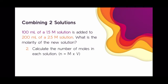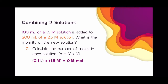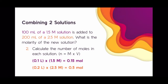The next step is to calculate the number of moles in each solution. To find moles, multiply the molarity of that solution by the volume in liters. For the purple solution, multiply 0.1 liters by 1.5 molar to get 0.15 moles of solute. For the orange solution, multiply 0.2 liters by 2.5 molar to get 0.5 moles of solute.